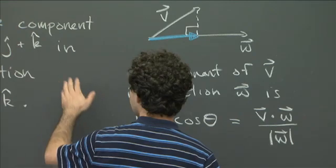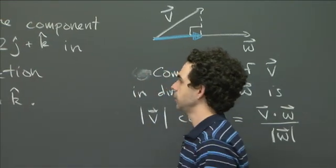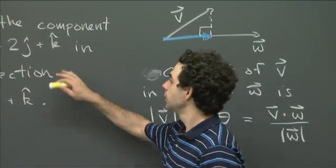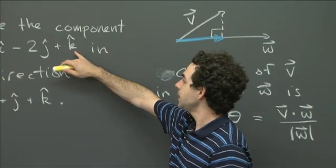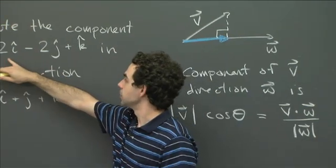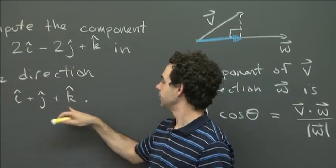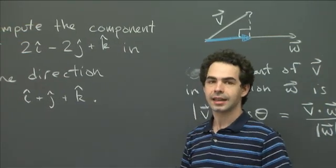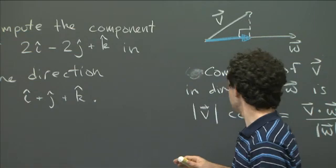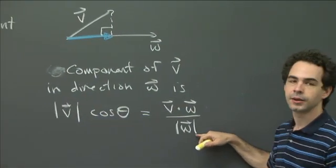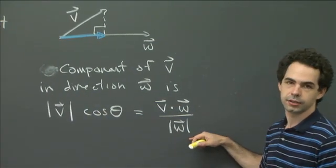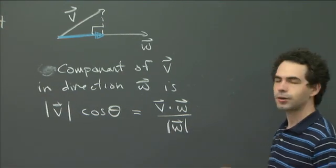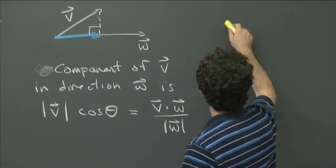And indeed, in this problem, we're given v and w just in their nice coordinate form. So we're given that our vector v that we want the component of is 2i minus 2j plus k, and the direction w that we're looking at is i plus j plus k. So in our case, we just have to compute these expressions, v dot w and the length of w, in order to put them into this formula. And then we'll be done.